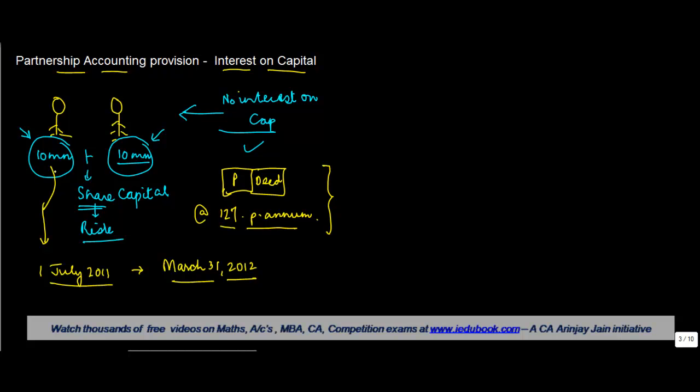So what happened was that the business basically used this 10 plus 10 million. Let's call these guys X and Y. The business actually used this money during this financial year for a period of how many months? From July 1 to March 31, which is nine months.